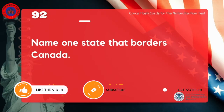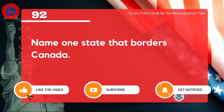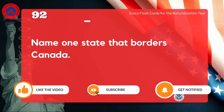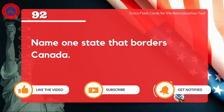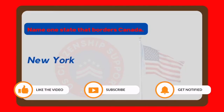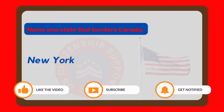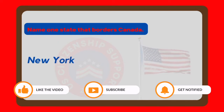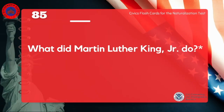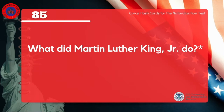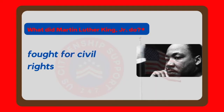Name one state that borders Canada. New York. What did Martin Luther King Jr. do? Fought for civil rights.